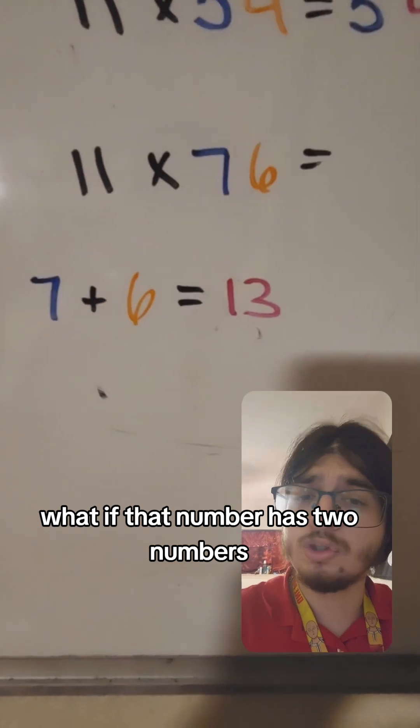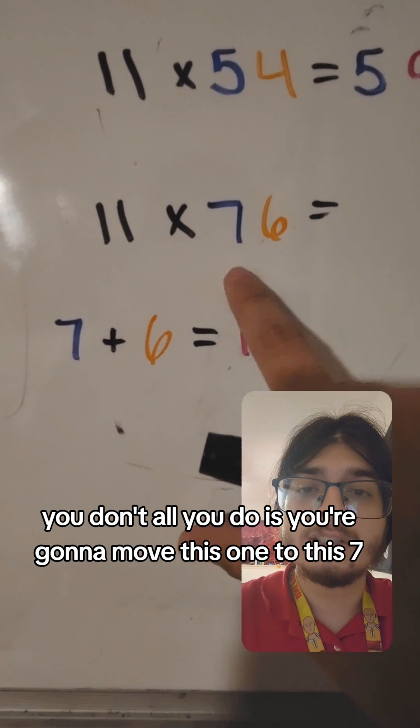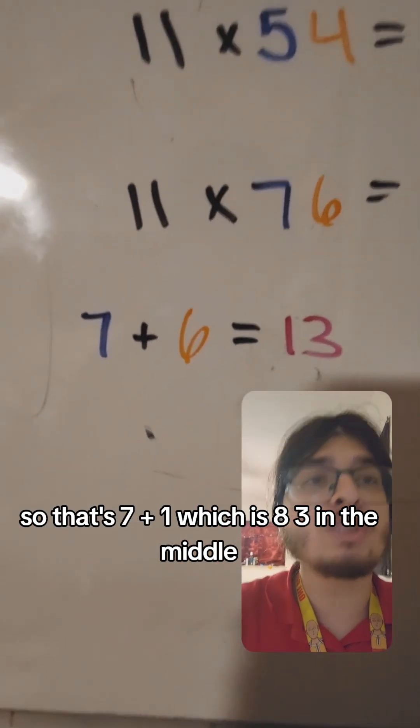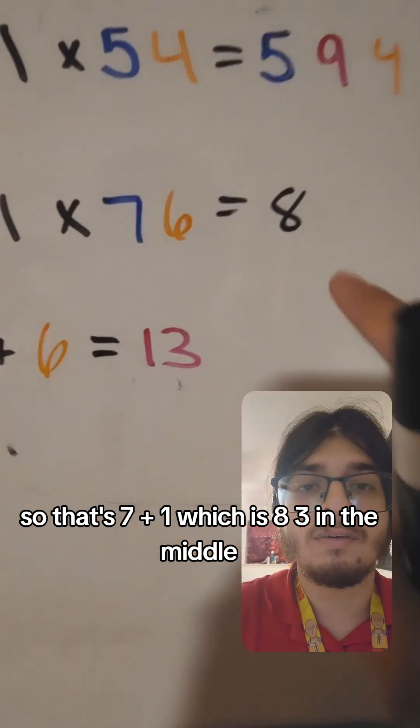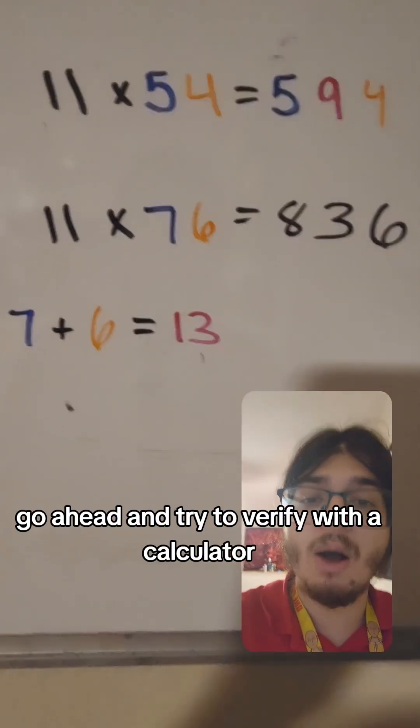What if that number has two numbers? Do you put that number in between? Well, no, you don't. All you do is you're going to move this one to this 7. So that's 7 plus 1, which is 8, 3 in the middle, and then the 6 at the end. Go ahead and try it and verify with a calculator.